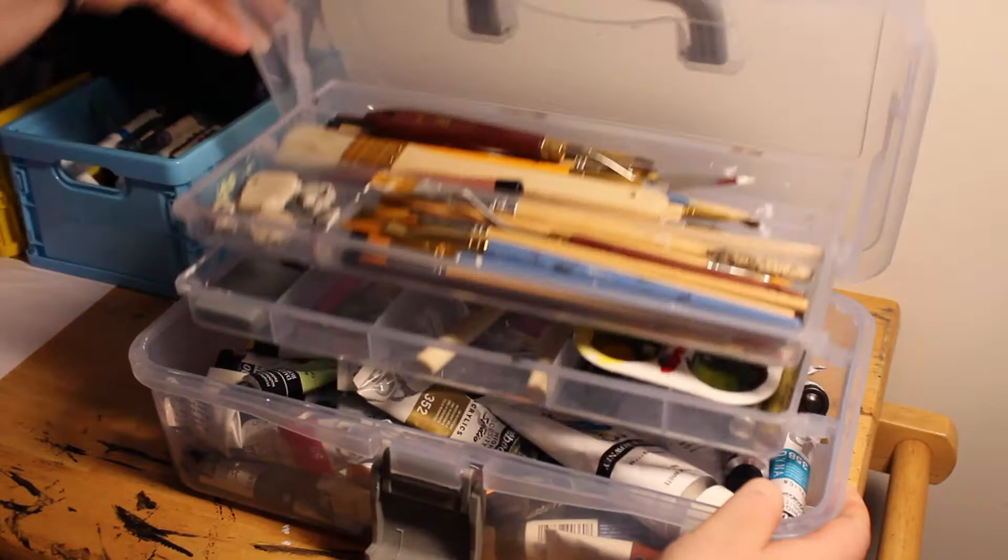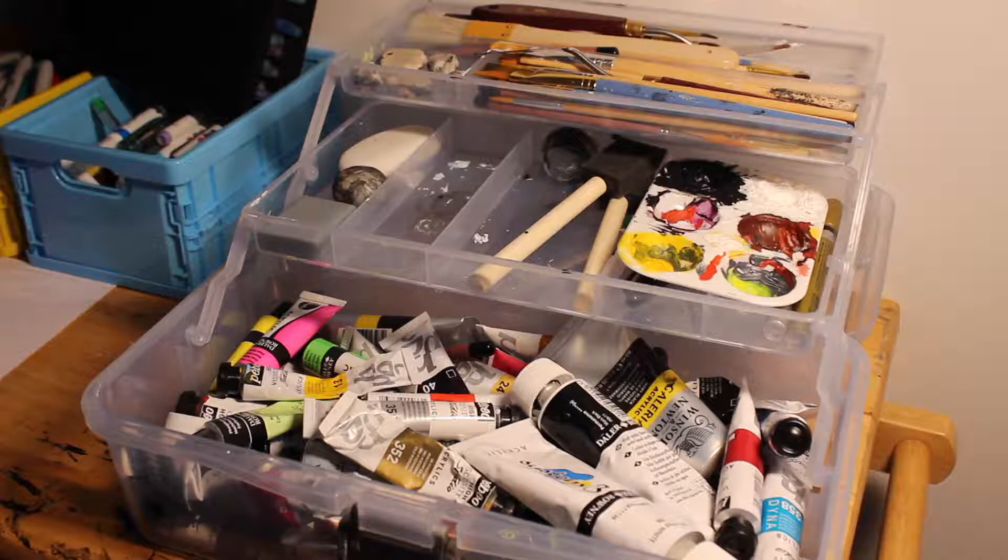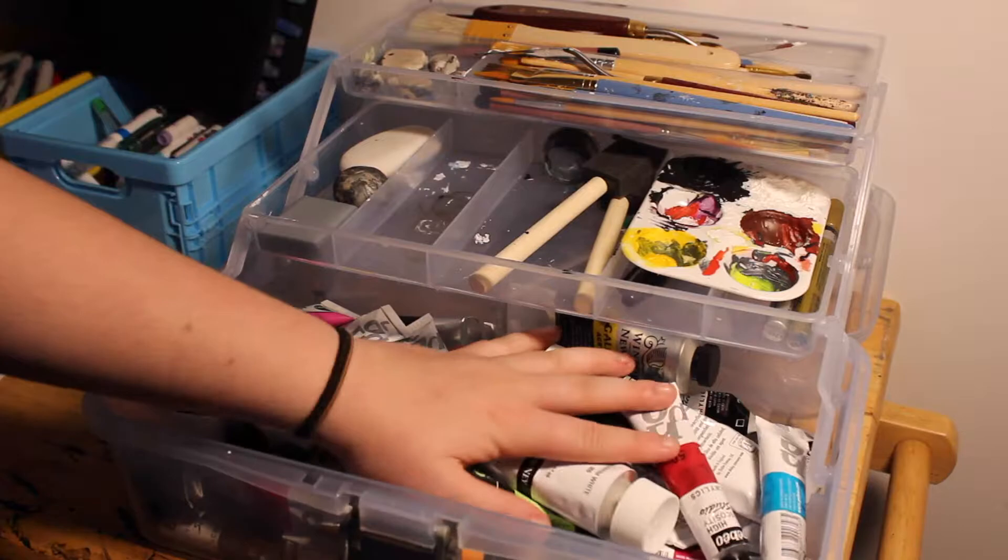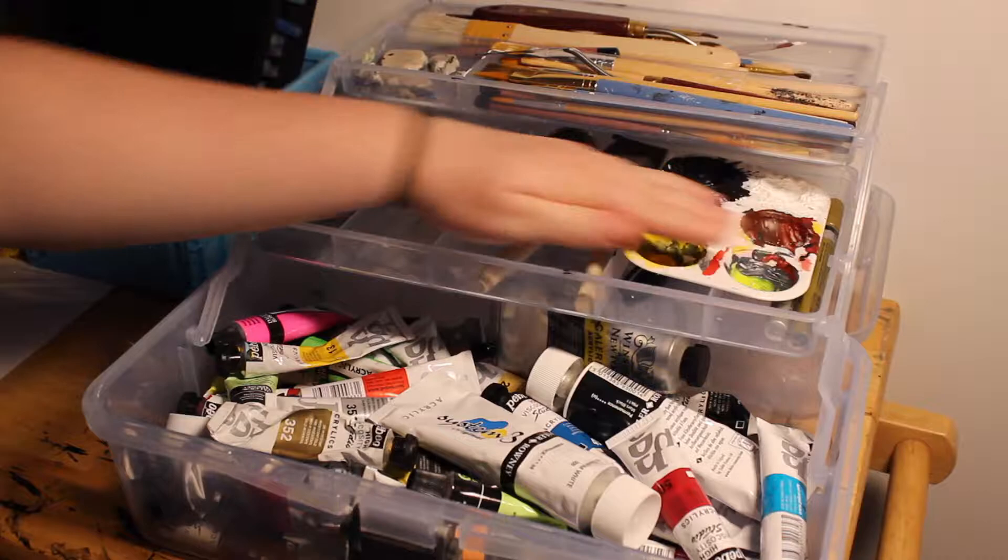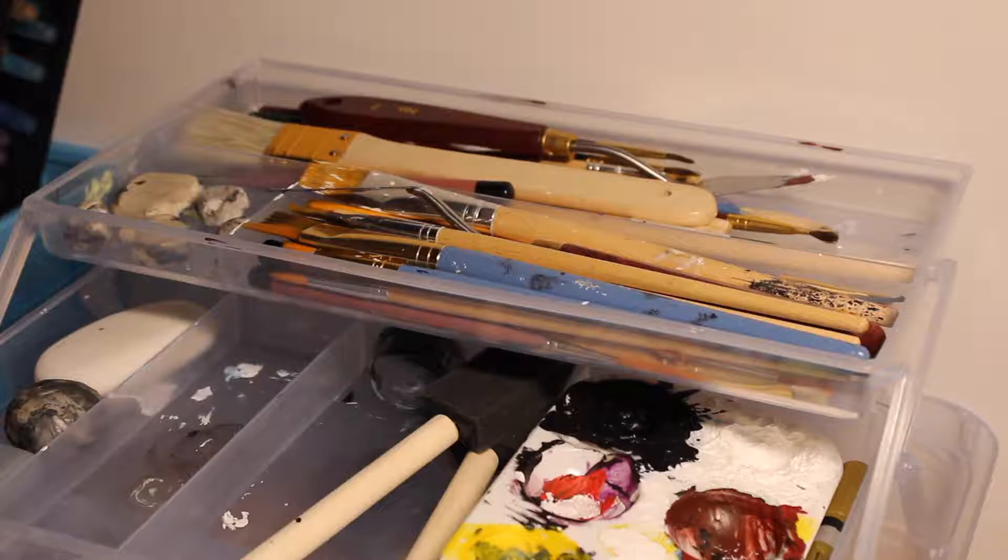Here we go. Ta-da! This is my paint caddy. So, it has, like, a total of three sections. There's three main sections as you can see. The bottom here is the first section. And then the second section's this middle part. And the third and final section is here. I am going to go ahead and start with the first section.